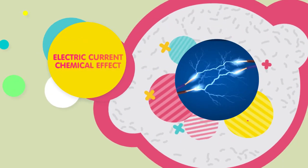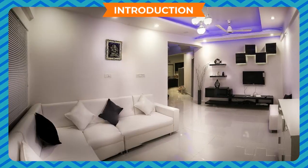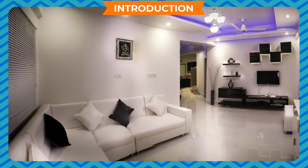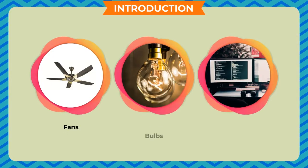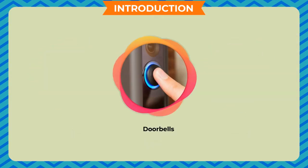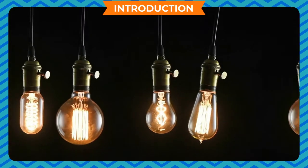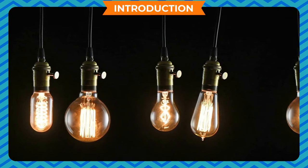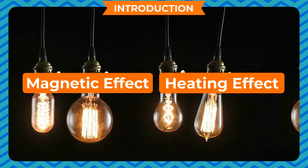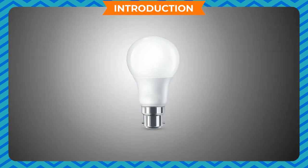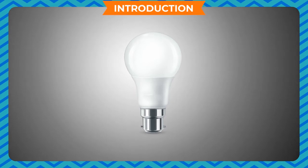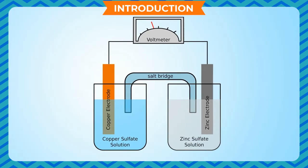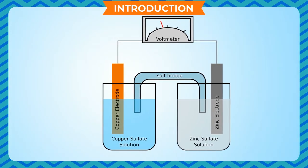Electric Current and Chemical Effect. We use electricity in our homes for different things like fans, bulbs, heaters, doorbells, and so on. These devices make use of two different effects of electric current: the magnetic effect and the heating effect. Another widely used effect of electric current is its chemical effect. In this chapter, we will study about the chemical effect of electric current.